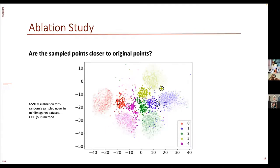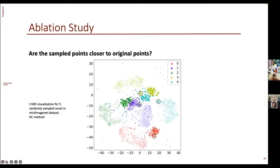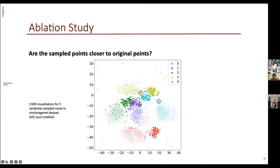In a second randomly sampled set of five classes, you can again see that with GDC the blue cluster moves closer to the blue stars, the green cluster moves closer, and the red cluster moves closer as well. That's precisely where the 3-5% accuracy improvement comes from — the points our method samples are closer to the ground truth, or closer to where they should be in the feature space.